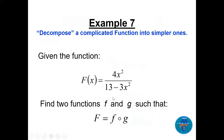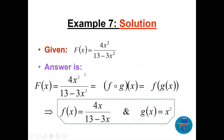Now decomposition: given the big function F = 4x² / (13 − 3x²), find two functions f and g such that f∘g = F. We need f(g(x)) to equal the big F. One approach: let g(x) = x², then let f(x) = 4x / (13 − 3x). If we replace g inside f, we recover the big F. There can be more than one valid answer.